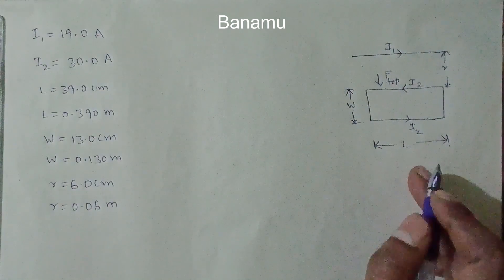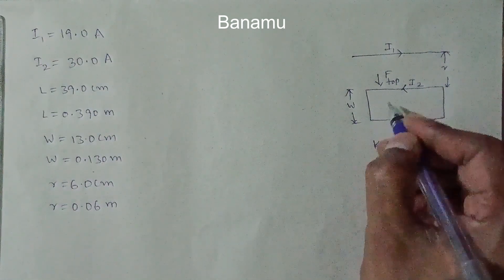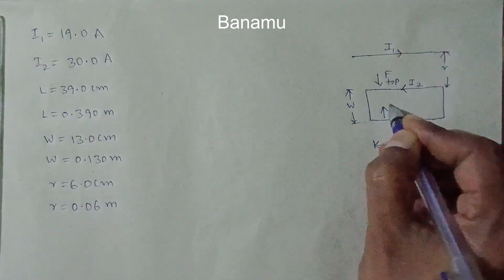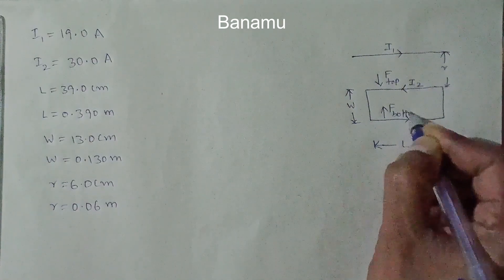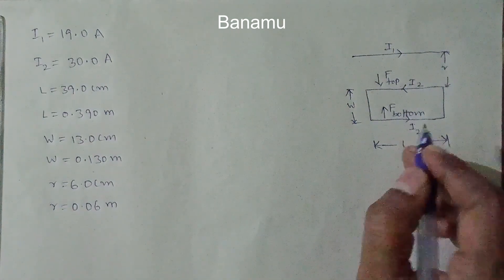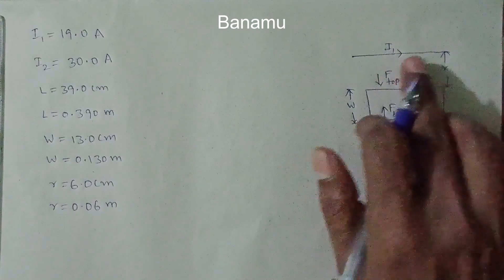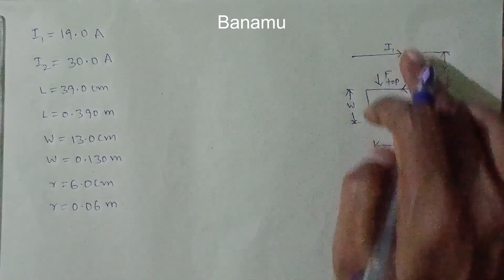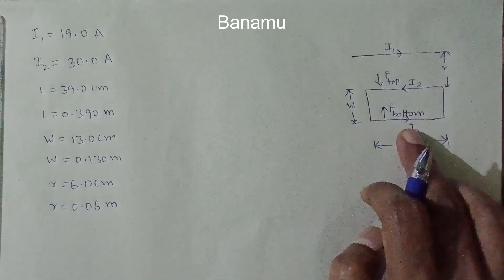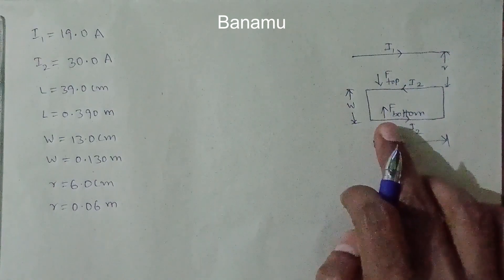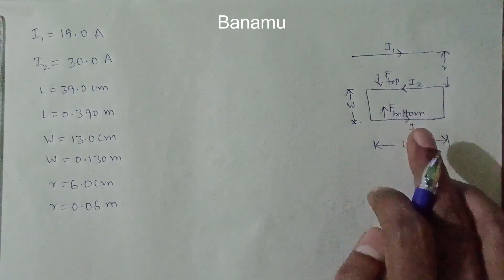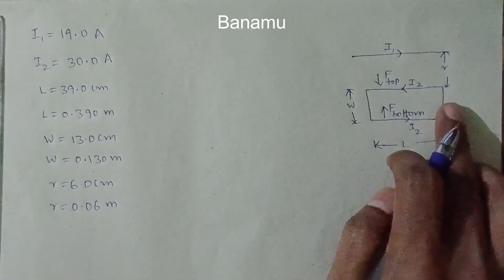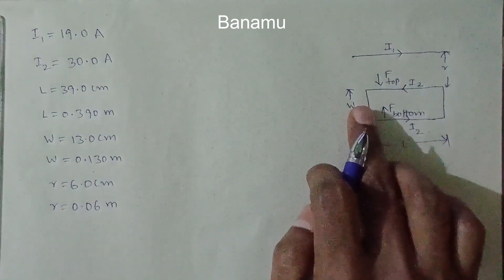The force acting on the bottom of the loop is directed upwards, because the direction of the current in the wire and the current in the bottom of the loop are the same — so they attract each other. For the left and right sides of the loop, the forces are equal in magnitude but opposite in direction, so they cancel each other out.